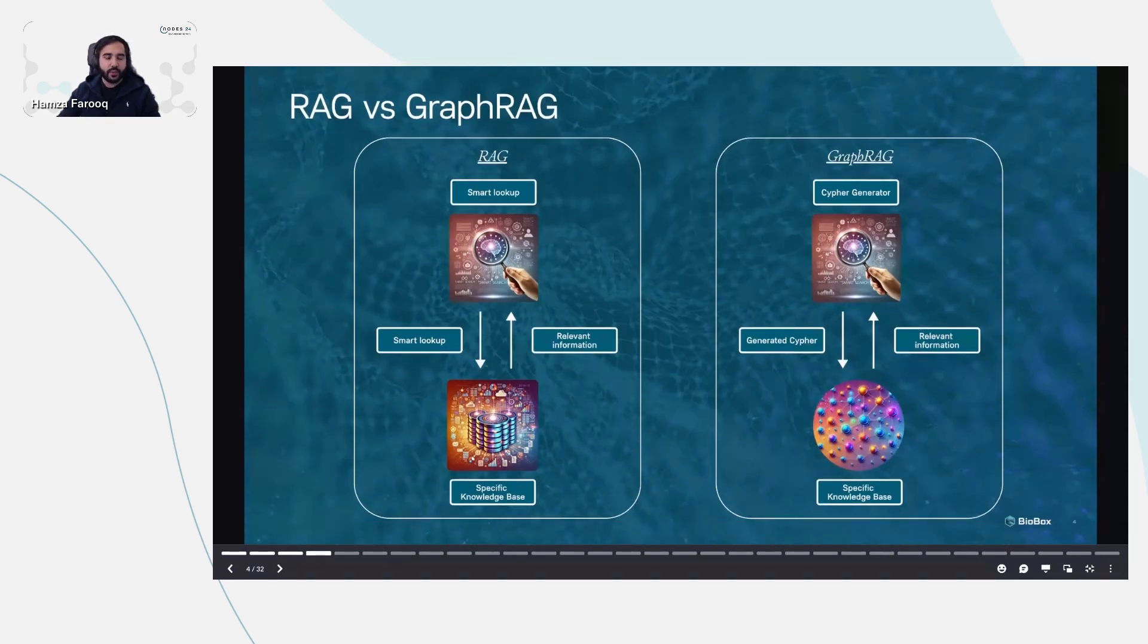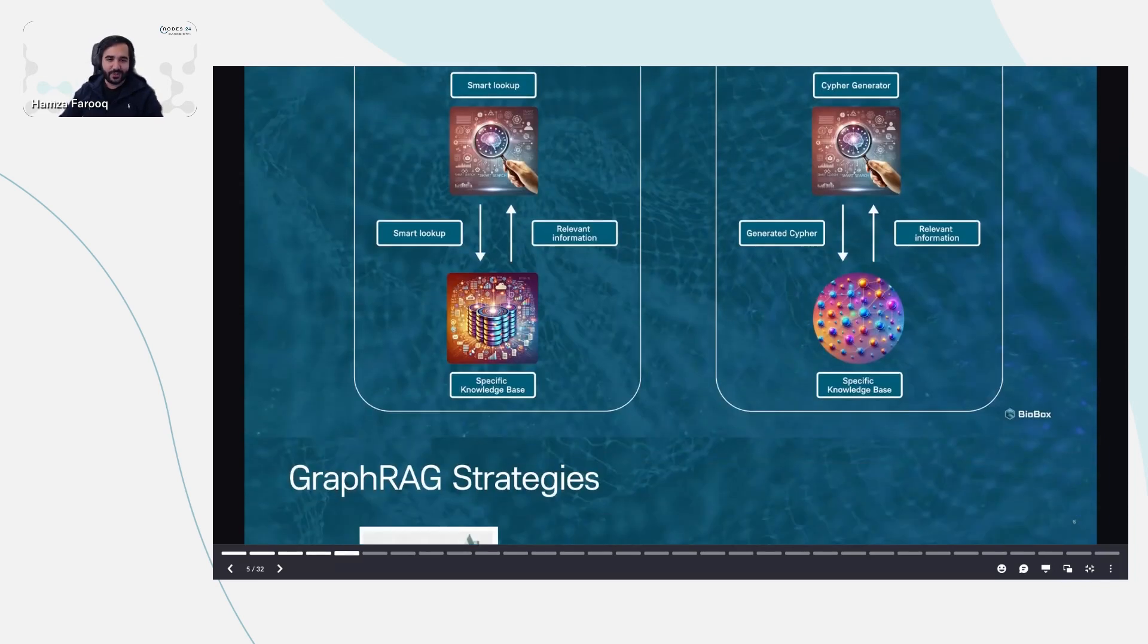While RAG is powerful, when dealing with highly interconnected datasets, more specificity and structure are needed. This is where GraphRAG comes in. Building on RAG, GraphRAG uses graph databases to model complex relationships such as biological pathways or drug target interactions. Unlike RAG, which retrieves isolated data points, GraphRAG understands their connections. For instance, when studying gene disease interactions, GraphRAG can reveal secondary or tertiary relationships that standard document-certified systems miss, making it ideal for biopharma use cases where uncovering hidden connections is crucial.